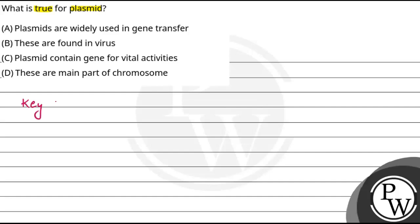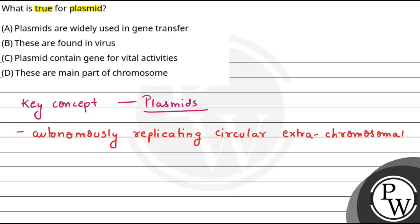The key concept here is plasmids. If we define plasmids, we can say that these are basically autonomously replicating circular extra-chromosomal DNA which is present in cells.